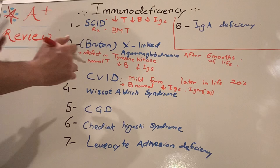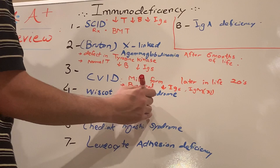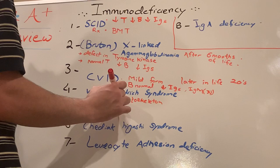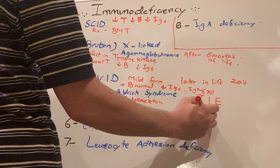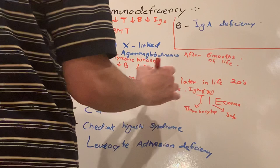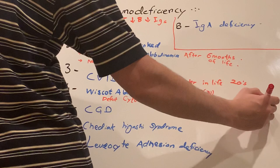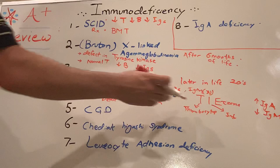Now next is Wiskott-Aldrich. What's happening here is there's a problem with defect in cytoskeleton of all the cells, right? Cytoskeleton defect. Remember the mnemonic is TIED: T for thrombocytopenia, I for infections, E for eczema. And what about antibodies? You turn the W upside down, so down IgM and increased IgA. That's a great way to remember - turn the W inverted. So it means IgM decrease, IgA increase.